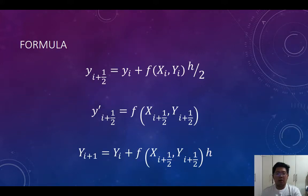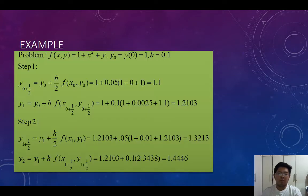Our formula for this method is: y_{i+1/2} = y_i + f(x_i, y_i) * h/2. For y'_{i+1/2}, we have f(x_{i+1/2}, y_{i+1/2}). For y_{i+1}, that's y_i + f(x_{i+1/2}, y_{i+1/2}) * h.